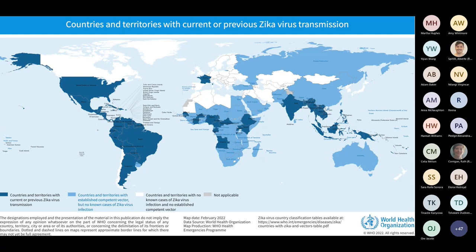This is a map showing countries and territories with current or previous Zika virus infection. We have 89 countries reporting transmission from 2015 onwards, and it continues up to now. Over a million people are thought to have been infected, and approximately 5,000 confirmed congenital syndrome cases associated with Zika.